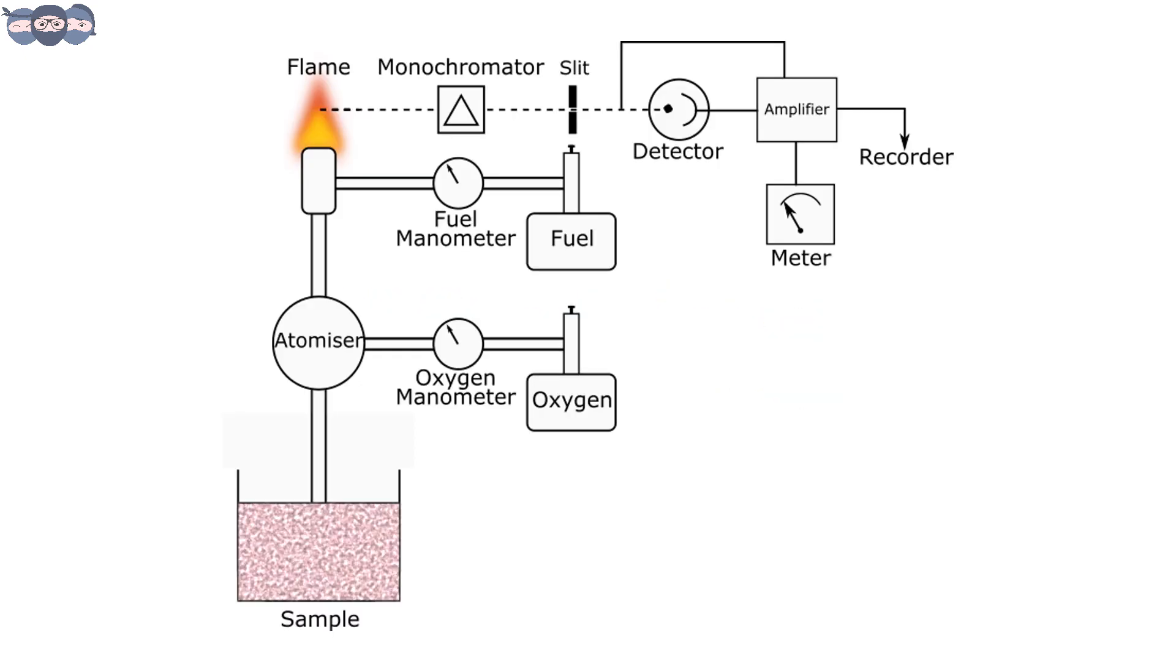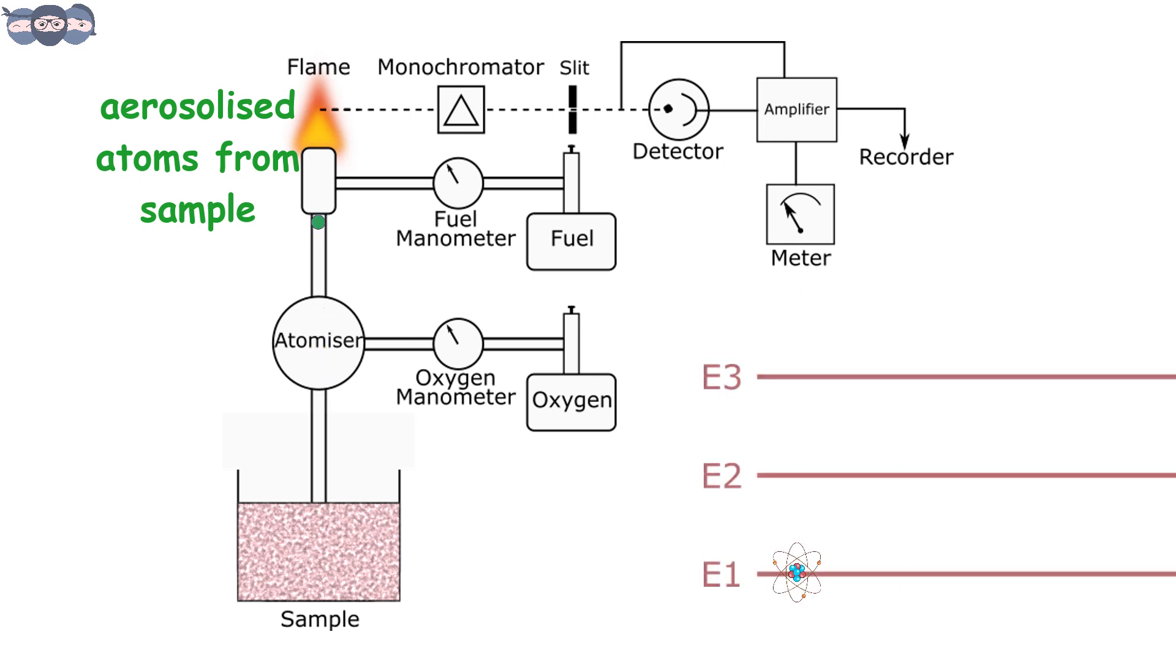Now, let us understand the working of this unit. As stated earlier, the sample is first converted into aerosol form. Then, this aerosol is made to pass into the flame. The aerosol contains the atoms from the sample. Once in the flame, these atoms absorb energy.